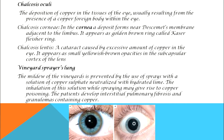Next is chalcosis cornea, where a ring-type formation is made in the cornea near the Descemet's membrane, adjacent to the limbus. This ring is golden brown in color, as seen in the picture. A normal eye has no such ring, but in chalcosis cornea the golden brown ring is clearly visible. This ring is known as the Kayser-Fleischer ring.